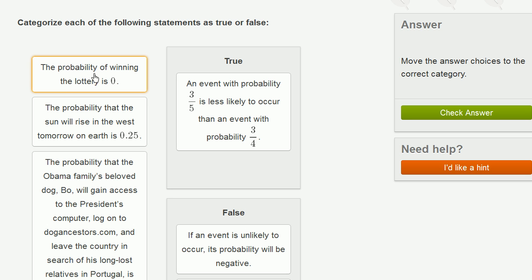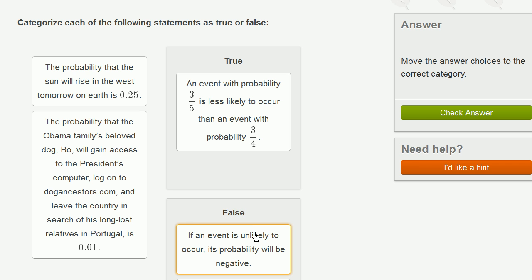The probability of winning the lottery is 0. Once again, you can win the lottery, it's within the realm of possibility. So it's not 0. It's a very small number, it could be close to 0, but it's not 0. So this is false.